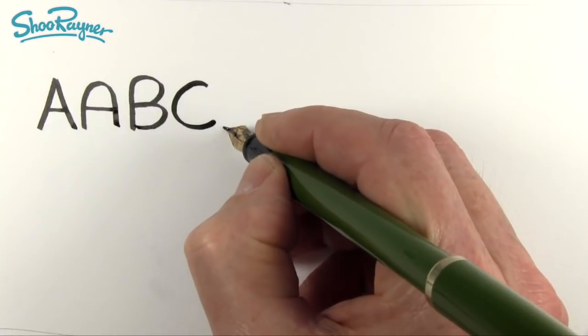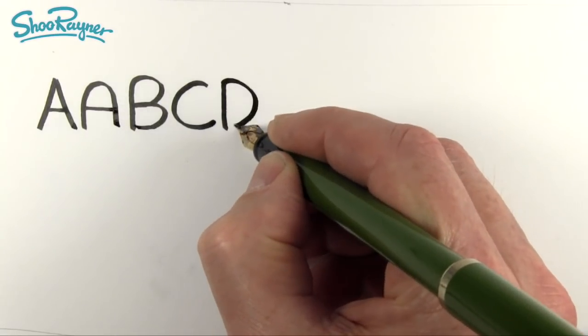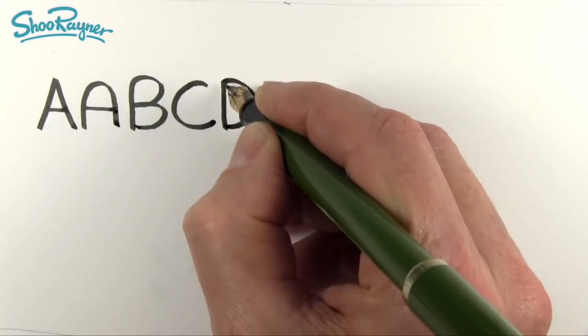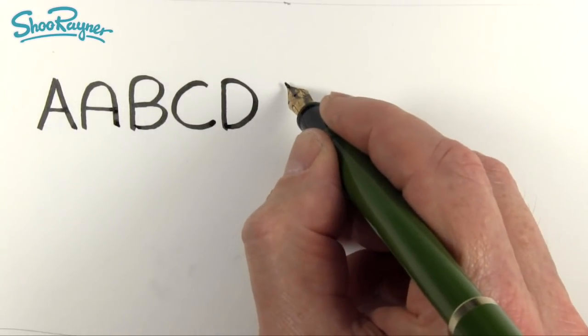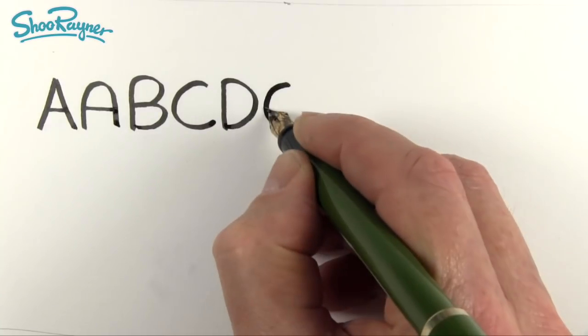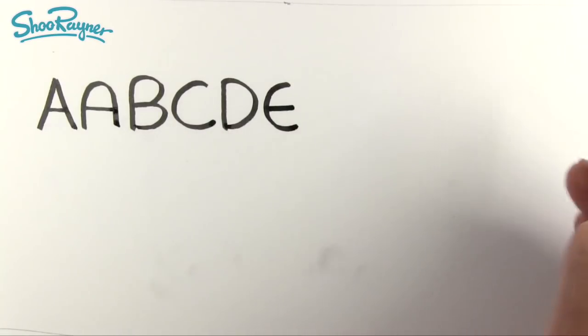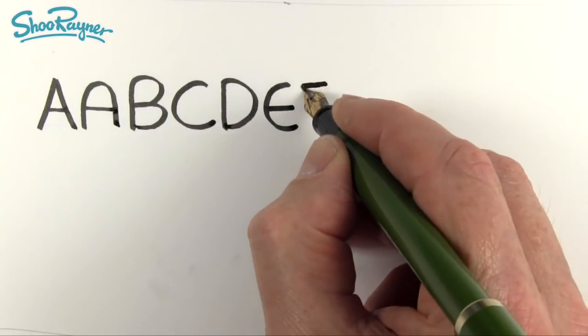D, again start at the bottom, up and around, so it's just one smooth movement with a kind of little stop at the top. E, there's a very efficient way of doing that, which is to go a curve with a line through it. If you don't like that, then you want to start at the top, down and across.